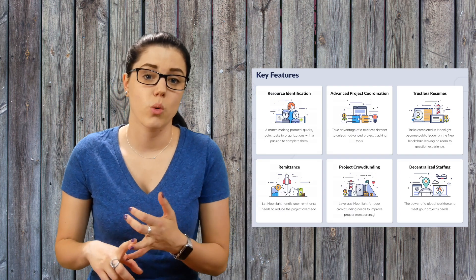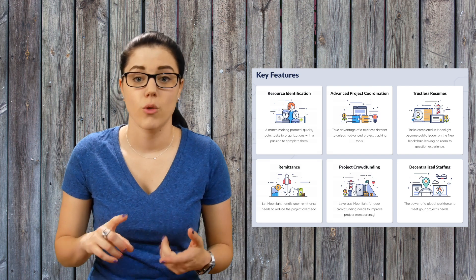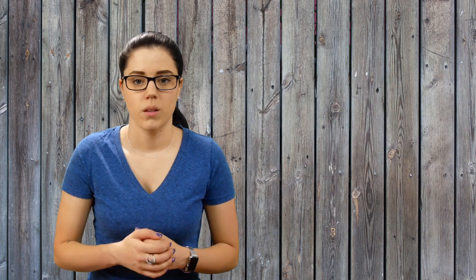Moonlight has a few components that make up their project, which are the marketplace, the project coordination, trustless resumes, remittance, and project crowdfunding. Moonlight equips both the employee and the employer with an ecosystem that they call the smart economy workforce. This smart economy workforce is broken down into two entities: the issuer, the one who creates the task, and the resolver, the one who fulfills the task.